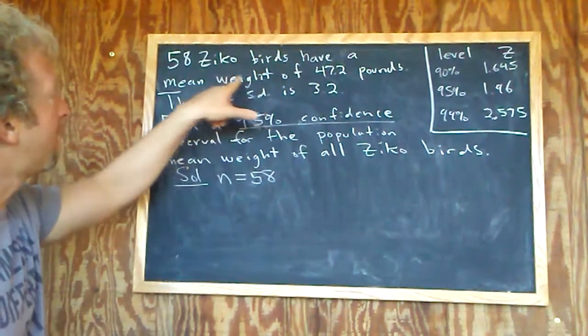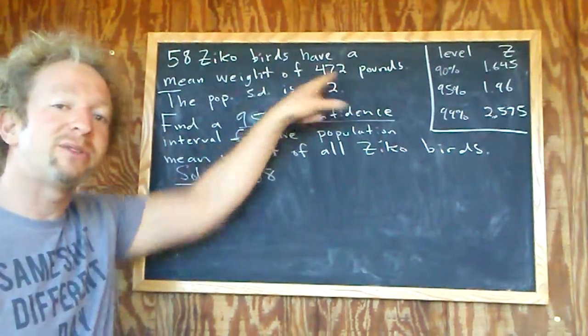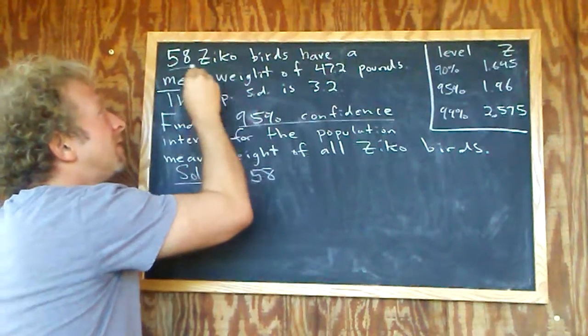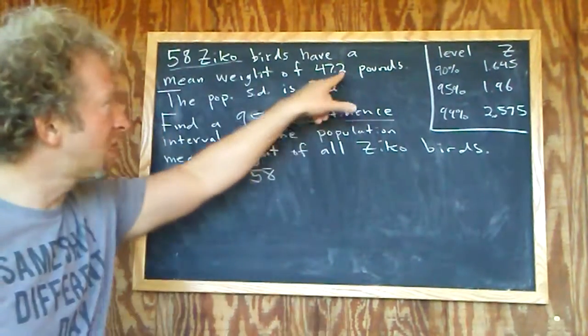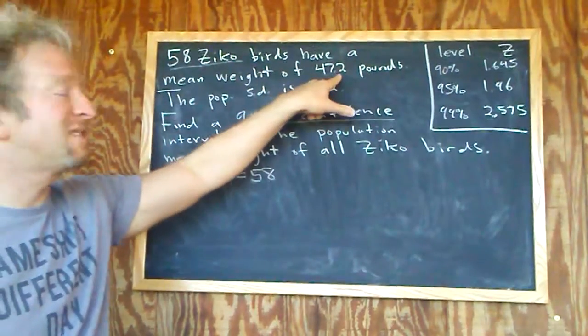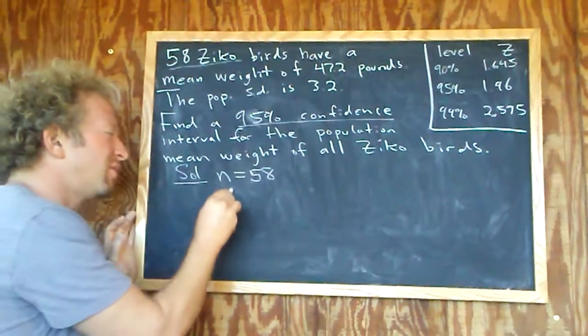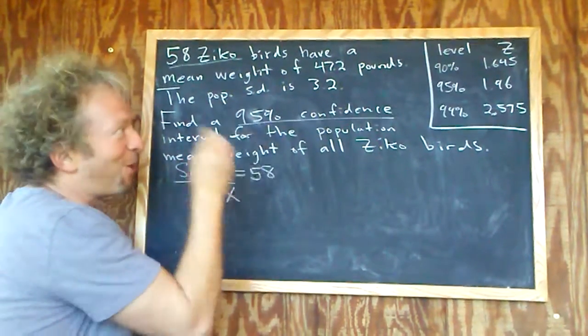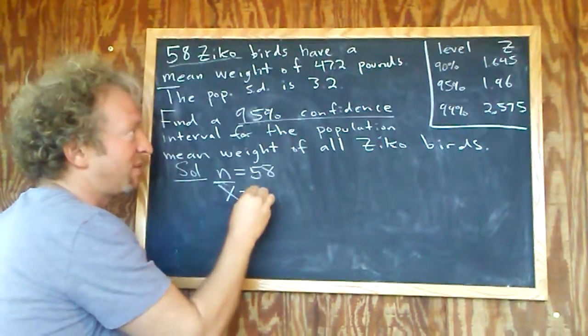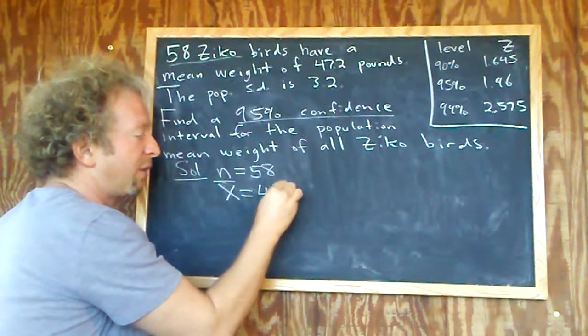We have a mean weight of 47.2 pounds, so that's the sample mean because it comes from the 58 birds. The 58 birds is the sample size, so this comes from the sample. Therefore this is the sample mean. The symbol we use is x with a bar, that's always the symbol for the sample mean, so 47.2.